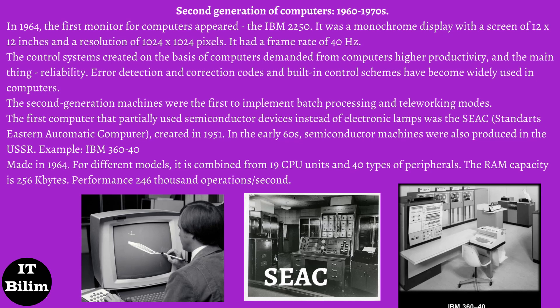Clock frequencies of electronic circuits increased to hundreds of kilohertz. External drives on hard magnetic disks and floppy disks began to be used as an intermediate level of memory between magnetic tape drives and RAM. In 1964, the first monitor for computers appeared, the IBM 2250. It was a monochrome display with a screen of 12x12 inches and a resolution of 1024x1024 pixels, with a frame rate of 40 Hz. Error detection and correction codes and built-in control schemes became widely used. The second generation machines were the first to implement batch processing and timesharing working modes. The first computer that partially used semiconductor devices was the SEAC (Standards Eastern Automatic Computer), created in 1951.